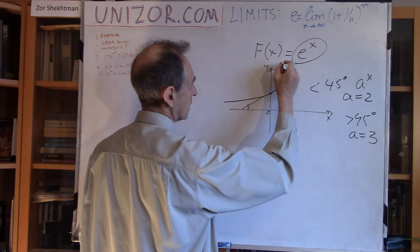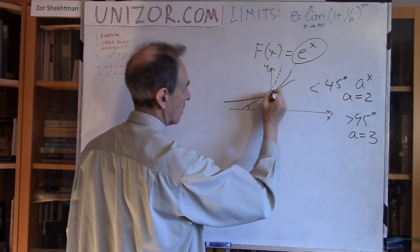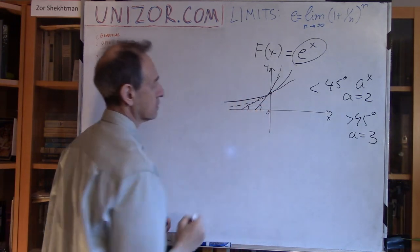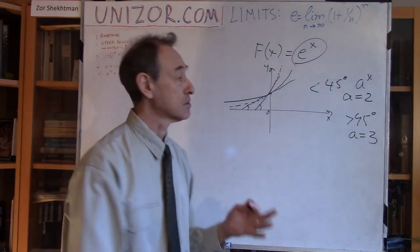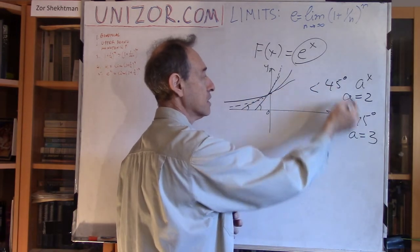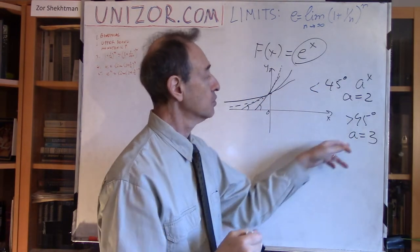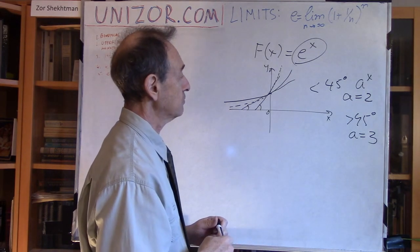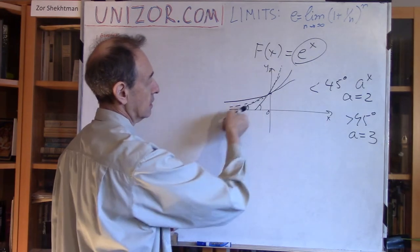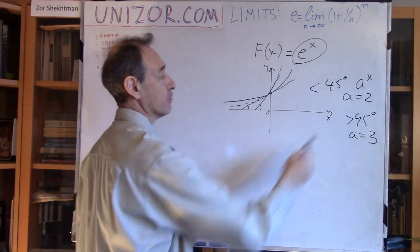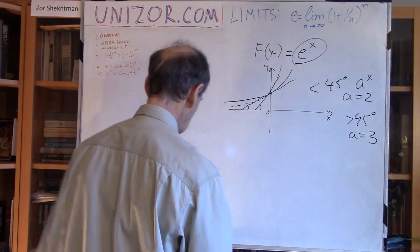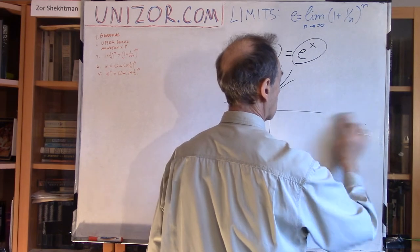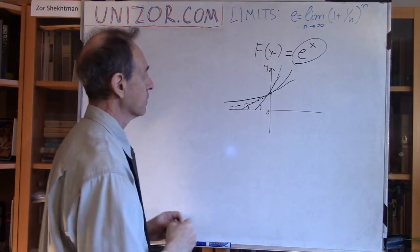So the base-3 function goes much steeper, and its angle will be greater than 45 degrees. So I presume that there is some number in between 2 and 3 which, if used as a base of an exponential function, will have the tangential line exactly at 45 degrees. And I call this number e.